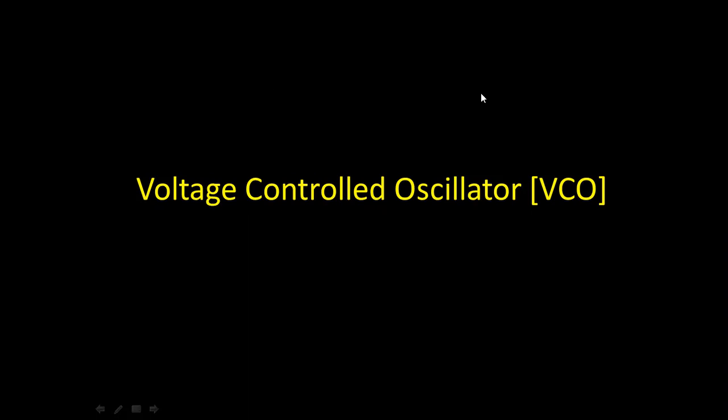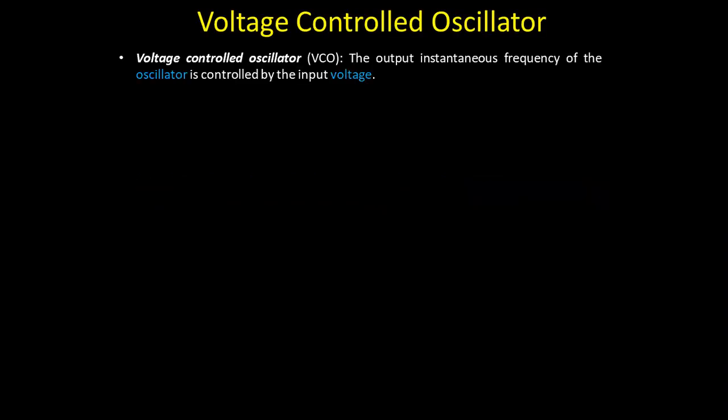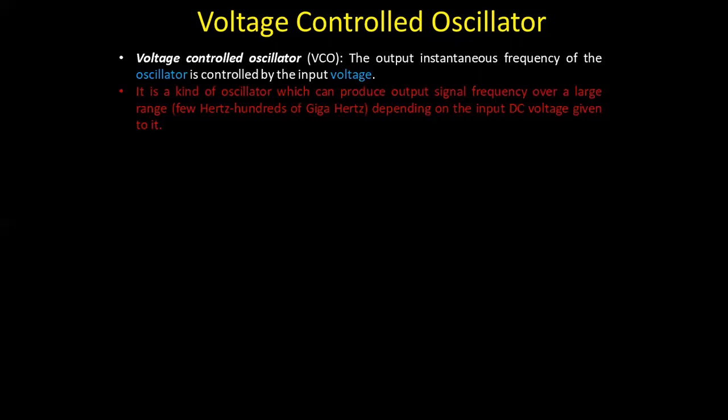Hello, my name is Laris Patil. Today I will explain the Voltage Controlled Oscillator using operational amplifiers. Let's start with what is the Voltage Controlled Oscillator. The name itself says that the output instantaneous frequency of the oscillator is controlled by the input voltage.